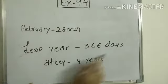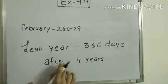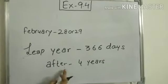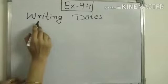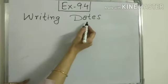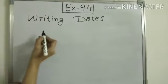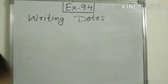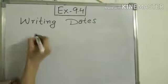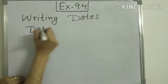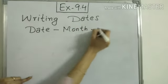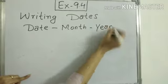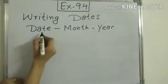So our concept is writing dates. So what is the pattern to write the date in numerals? So that is date, month, and year. This is the pattern to write the date: first will come date, then month, then year.